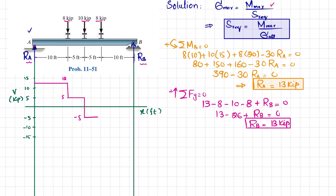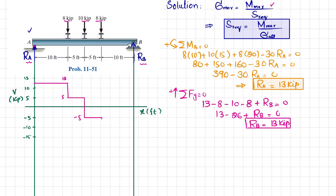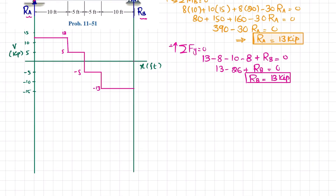The shear remains at −5 kips until the last 8-kip load, where −5 − 8 = −13 kips. It stays at −13 kips until the end, where Rb = +13 kips brings it back to zero. This completes the shear force diagram.